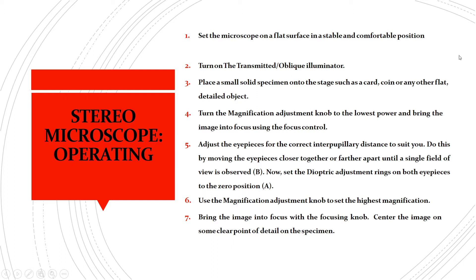To operate a stereomicroscope, first set the microscope on a flat surface in a stable and comfortable position. Then turn on the transmitted or oblique illuminator. Unlike a compound microscope, the light source is already built into the microscope base, so you simply turn it on.